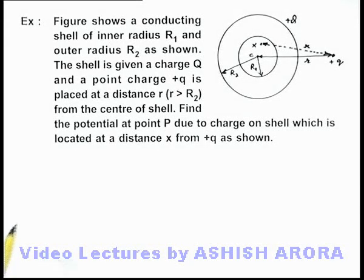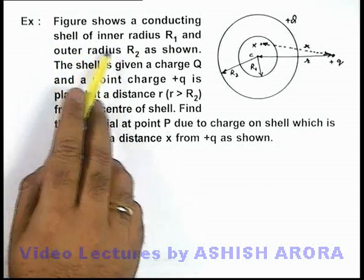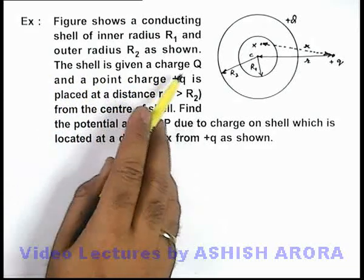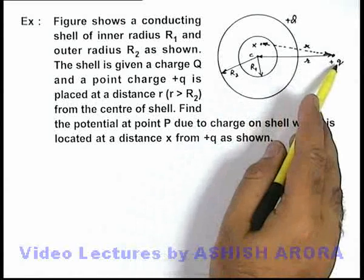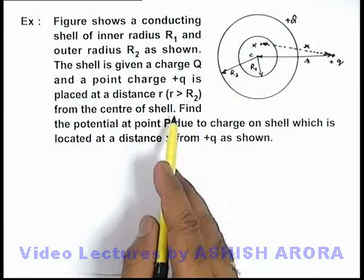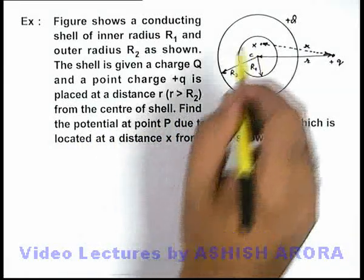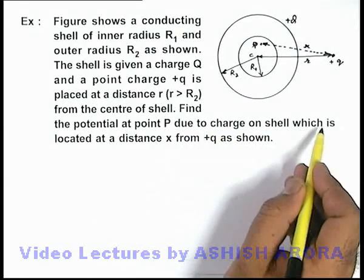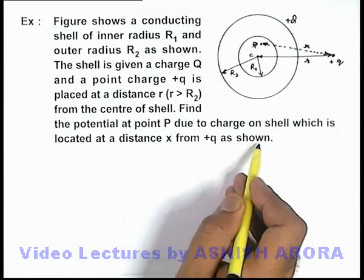In this example, the figure shows a conducting shell of inner radius r₁ and outer radius r₂, and the shell is given a charge q. A point charge +q is placed at a distance r from the center of the shell. We are required to find the potential at a point P, due to the charge on the shell, which is located at a distance x from +q as shown.